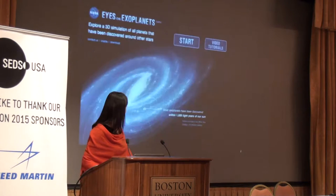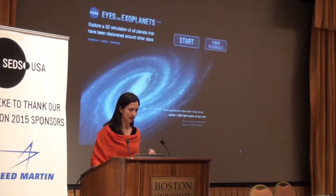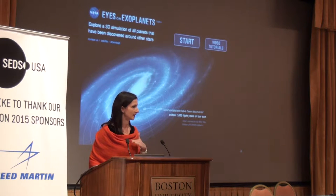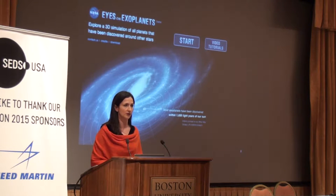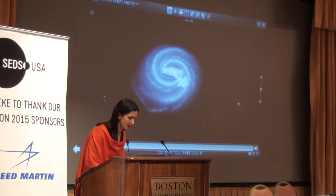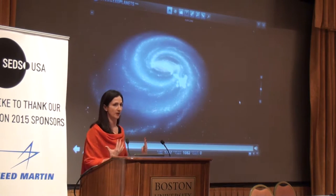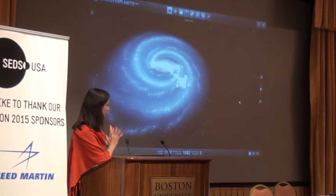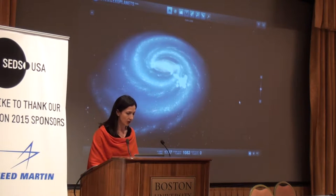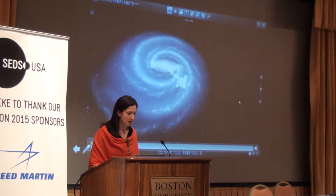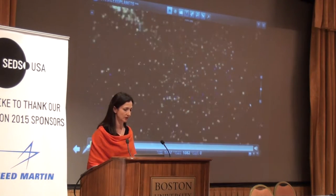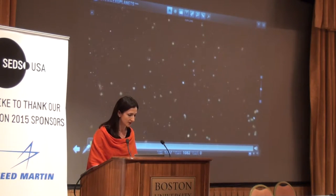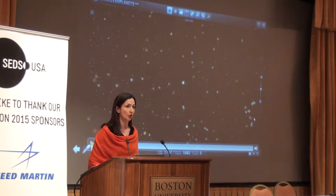What I'm going to start with is a movie — a little animation taken from software called Eyes on Exoplanets. I urge each one of you to download it, use it, and show it to all your friends. It's amazing. It shows you what we think our Milky Way galaxy looks like viewed from above, and quickly gets to a real map of the sky, a real map of stars.